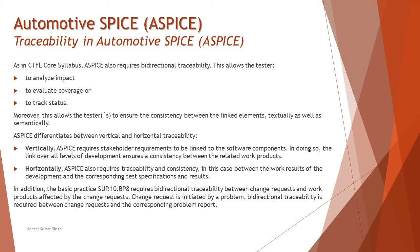Bi-directional traceability plays a vital role because it can be evaluated from both directions. For example, if you have traced requirements to test cases, you can measure whether all requirements are converted into test cases, and conversely, whether all test cases cover all requirements. That is what bi-directional traceability means.